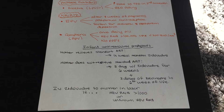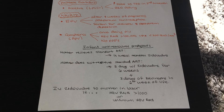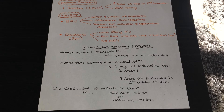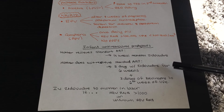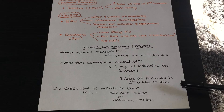For infant antiretroviral prophylaxis: if the mother received standard antiretroviral therapy, the neonate receives only a four-week course of zidovudine. If she did not receive standard therapy, the infant requires two drugs including zidovudine for six weeks, plus three doses of nevirapine within the first week of life. The first dose is given within 48 hours of birth, the second within 48 hours of the first dose, and the third within 96 hours after the second dose.